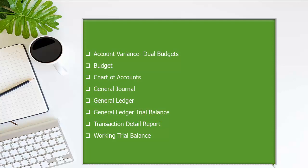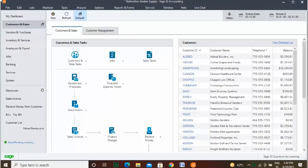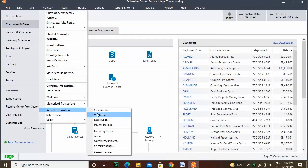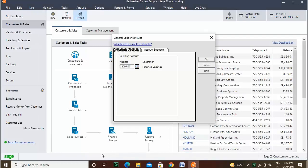Before we deep dive into the processes, let us take a brief look at the general ledger reports that are commonly used. First are Account Variants — it displays the actual amount, budget amount, variance amount, and variance percent for the accounts and periods you select. Dual Budgets shows the actual amount, budget amount, variance amount, and variance percent for two budgets for the accounts and periods you select.